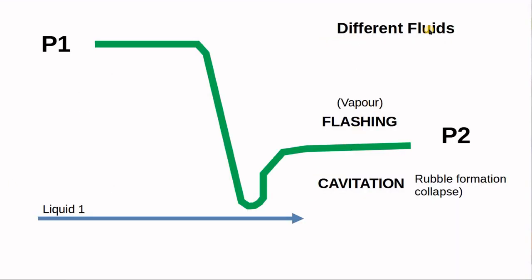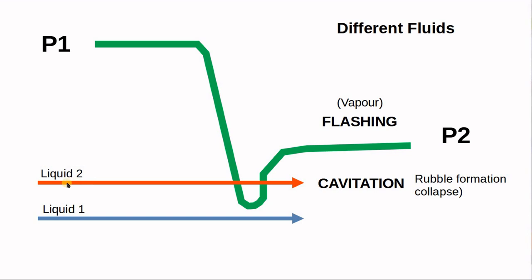Let's look at three flow scenarios. First: if the fluid's vapor pressure is far below the lowest pressure inside the valve, the liquid stays liquid all the way through and exits as liquid. Second: if the vapor pressure is slightly higher than the lowest pressure inside the valve but lower than P2, part of the liquid will flash to vapor internally, then collapse back when pressure recovers. This bubble formation and collapse is what we call cavitation.